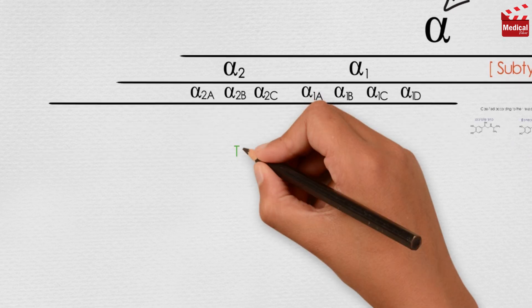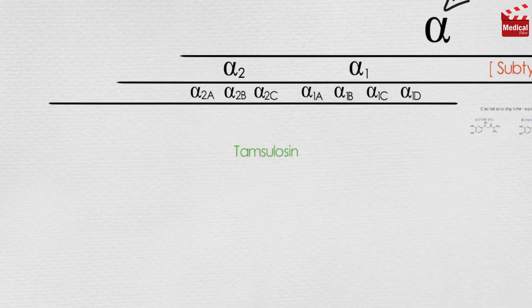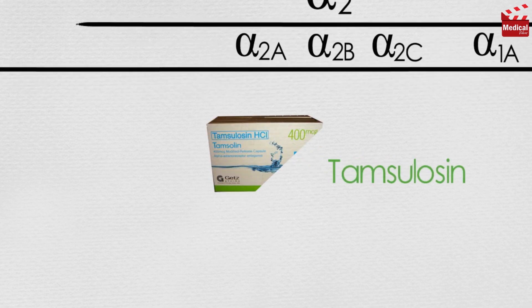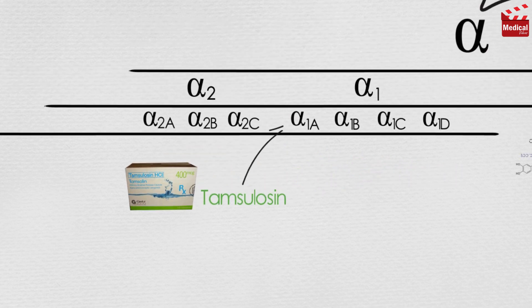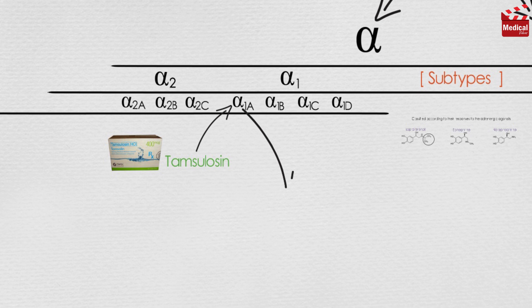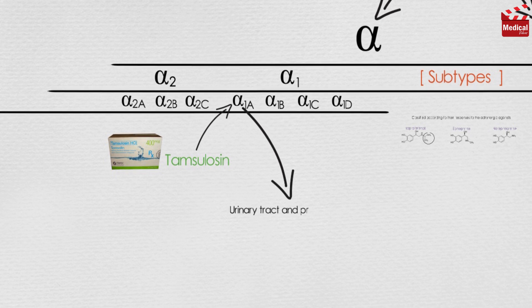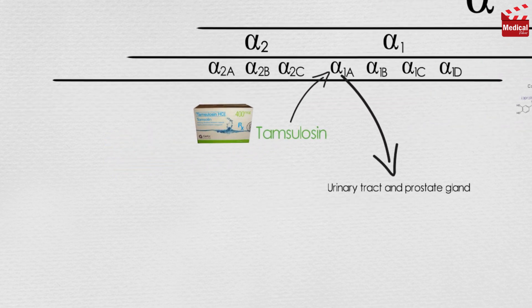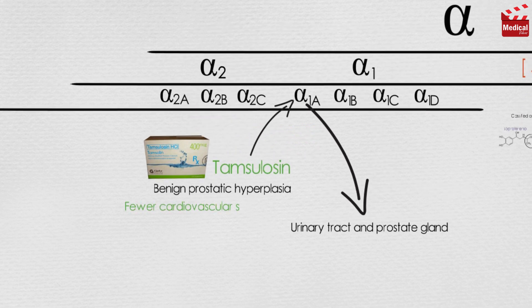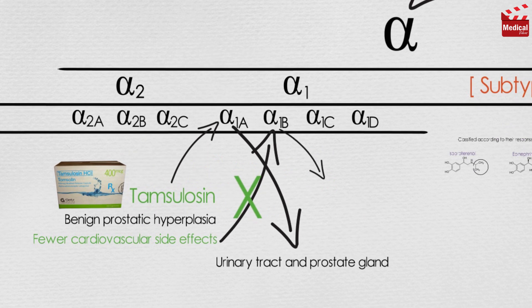Some drugs are selective to one subtype of these receptors. For example, tamsulosin is a selective alpha 1a, which is found primarily in the urinary tract and prostate gland, so it is used to treat benign prostatic hyperplasia with fewer cardiovascular side effects as it does not affect the alpha 1b subtype found in the blood vessels.